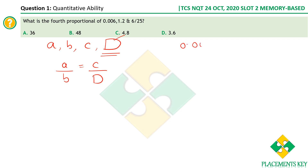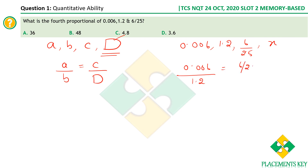So here we have 0.006, then 1.2, and then 6/25. The fourth proportional is a value x such that 0.006 divided by 1.2 is equal to (6/25) divided by x — that's what a/b = c/d means.